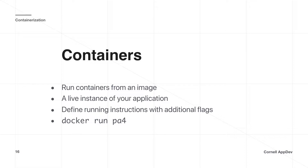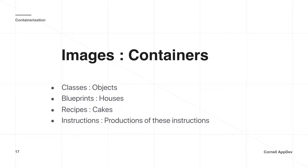A container is a live instance of the application, and you define running instructions with additional flags when you call it. For example, `docker run pa4` — where pa4 is a tag for a previously defined image. You can add flags to run it in the background, or define port mappings to route requests from your machine into the container. A useful analogy: images are to containers as classes are to objects, or blueprints are to houses — instructions versus productions of those instructions.